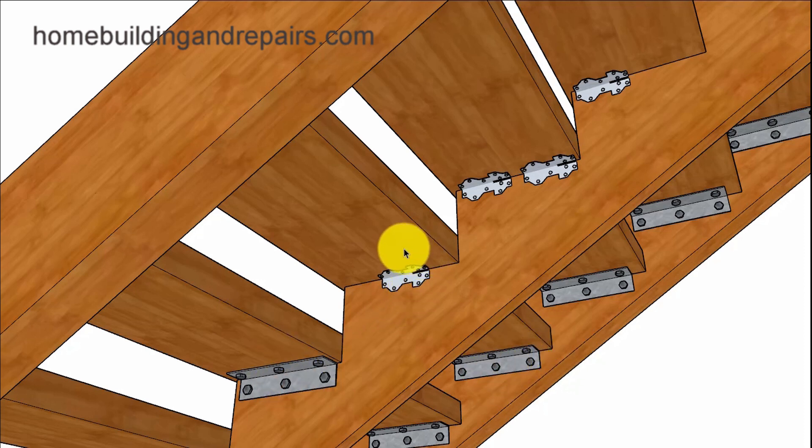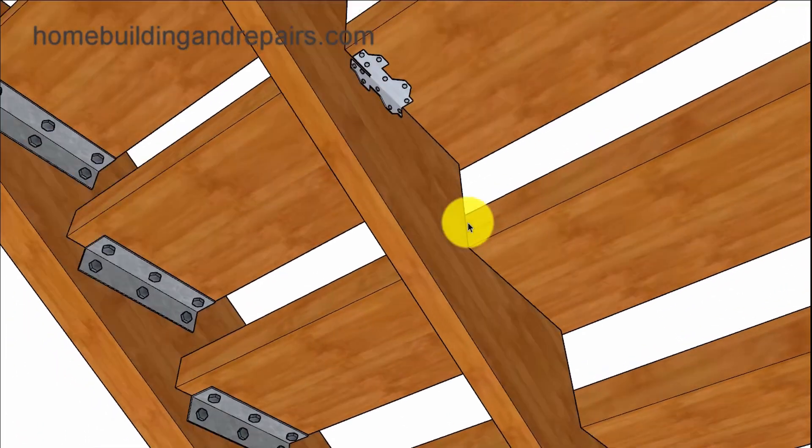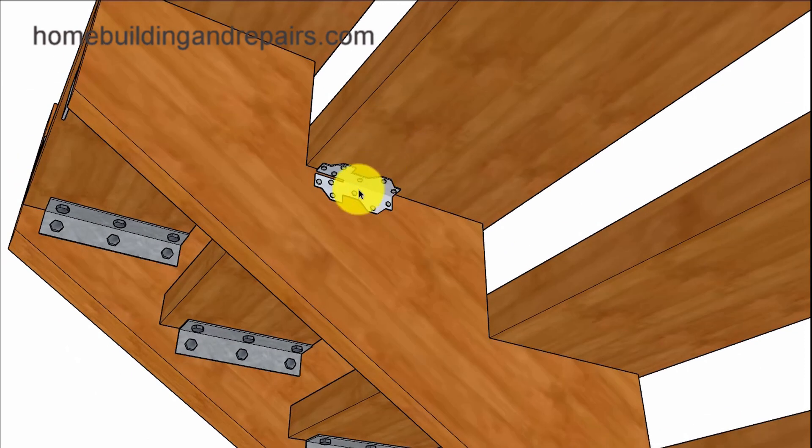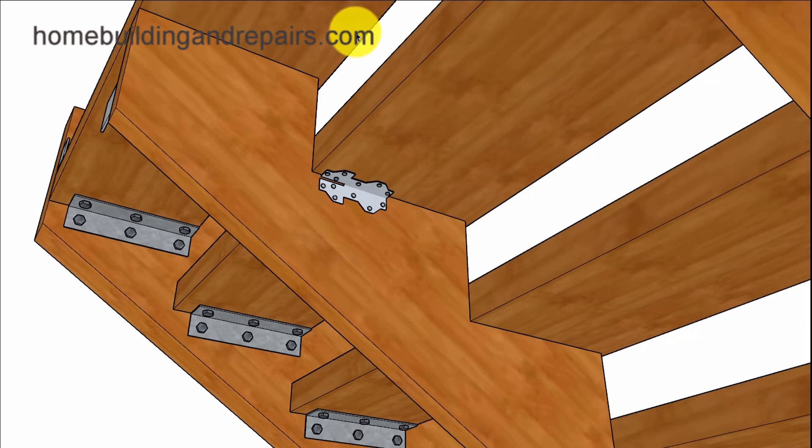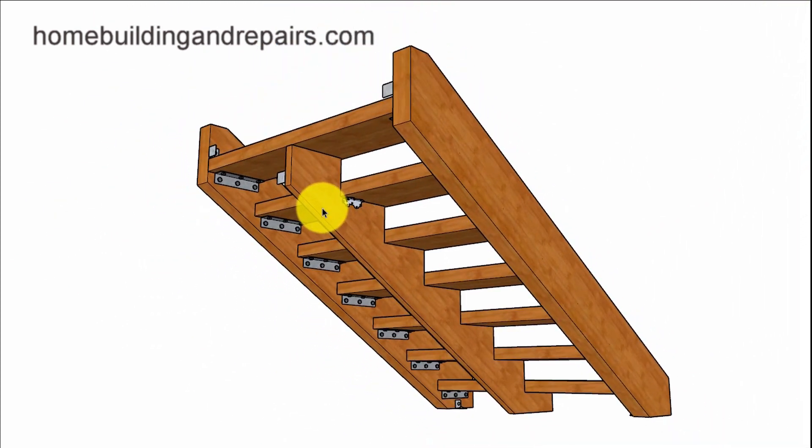Another would be to use another type of building hardware, like these framing anchors. You could always put them on both sides and stagger them if needed. So if you remember we had one on the other side, but it was located closer to the front of the tread. And again you can use more than one stringer depending upon the width of the stairway.